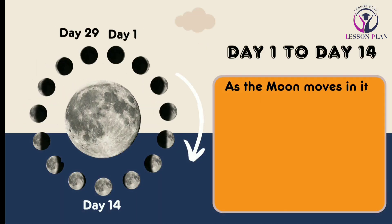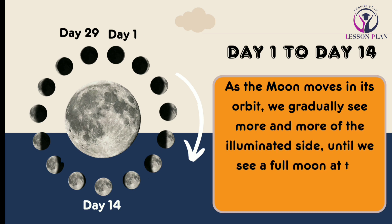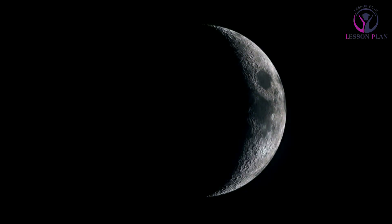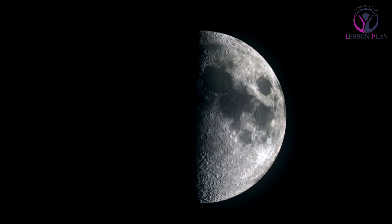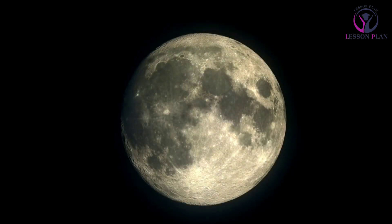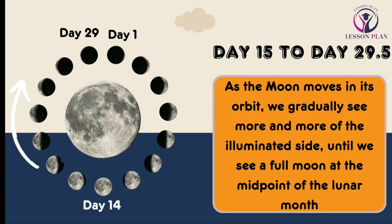At the beginning of the lunar month, we see a new moon, which appears as a dark circle in the sky because the side of the moon facing earth is not illuminated by the sun. As the moon moves in its orbit, we gradually see more and more of the illuminated side until we see a full moon at the midpoint of the lunar month.